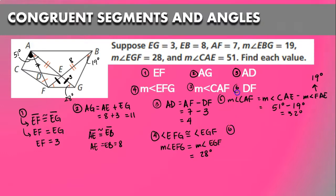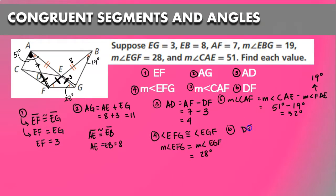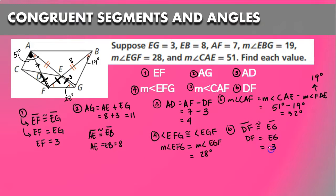Last but not least, we have DF. DF has the same tick mark as EF and EG, so segment DF is congruent with EG. That means the measurement of DF equals the measurement of EG, which is 3.